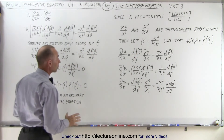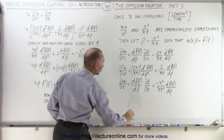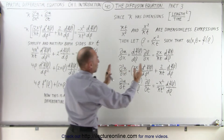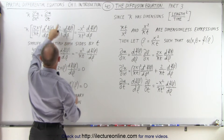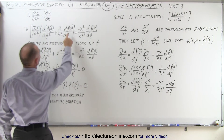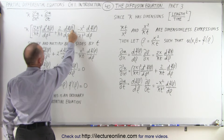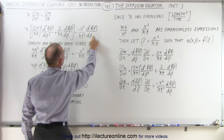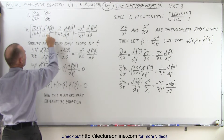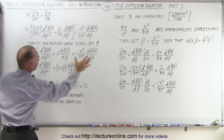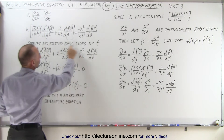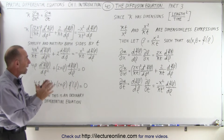Now we plug everything into our equation. We have k times the second derivative expression equal to the time derivative expression. Notice we have a d/d-beta of the function of beta on both the left and right sides, so those terms can be combined, along with the second derivative term. Before combining, we simplify the k's and multiply both sides by t. The k squared divided by k becomes k to the first power, and t squared multiplied by t becomes t to the first. One k cancels with the other, and multiplying by t eliminates a t, leaving just a 2.